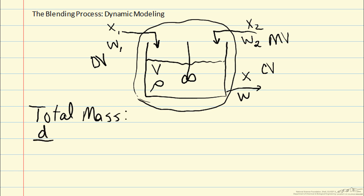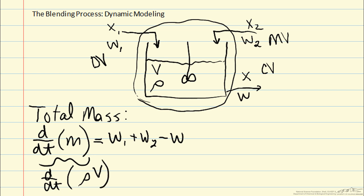So let's look at the accumulation in the control volume of mass. So accumulation is equal to what is going in W1 plus W2 minus what is leaving. And we can break down that mass variable into variables that we used in our diagram above. So in particular we can break that down into d dt of rho times V, density times volume.